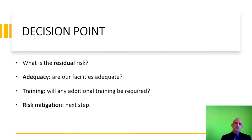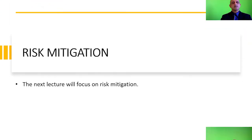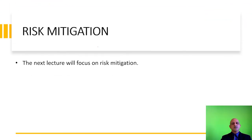At this point, we have to make a decision. The questions a biorisk manager considers are: what is the residual risk, are our facilities adequate, and do we need additional training? We then move on to the next step, which is risk mitigation — focusing on the mitigation of risk via the application of five controls.